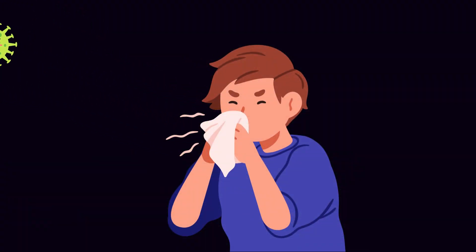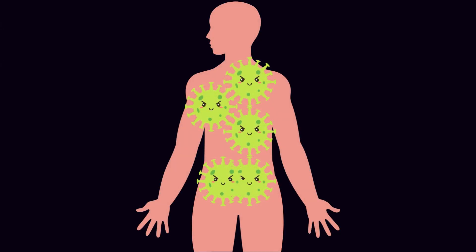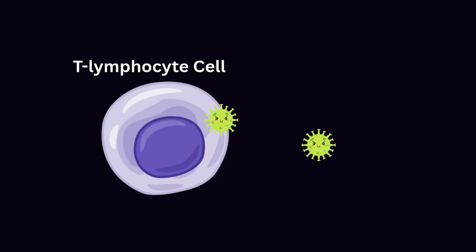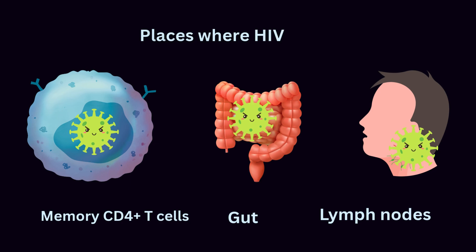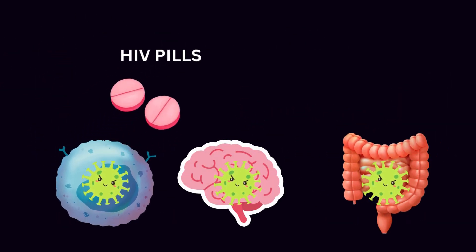The challenge of HIV: HIV is a master of disguise. Once inside the body, it attacks the immune system's T-cells, the very soldiers meant to protect us. Some of the virus hides in reservoirs inside tissues, like the brain, the gut, or even inside resting immune cells, where normal drugs can't reach.